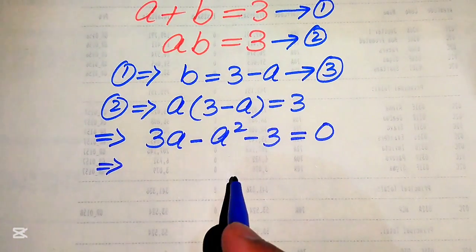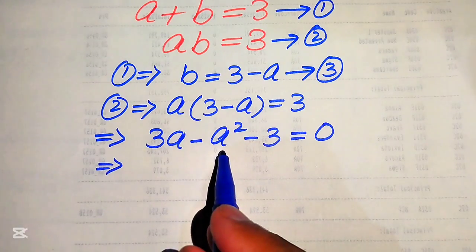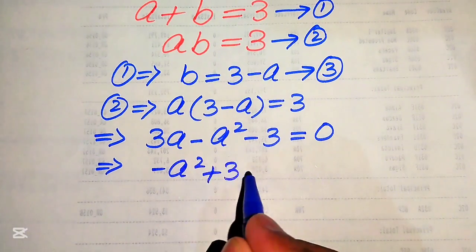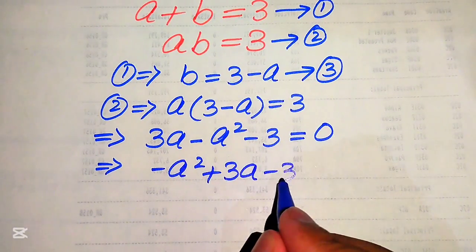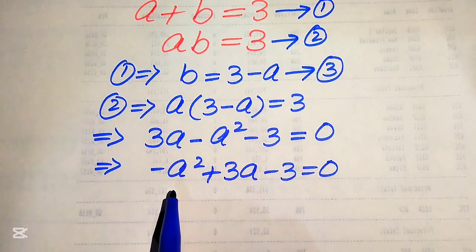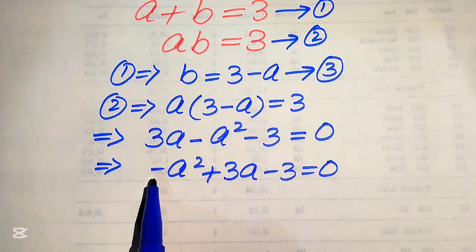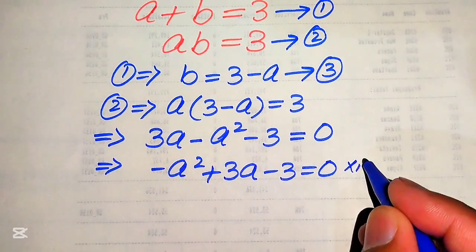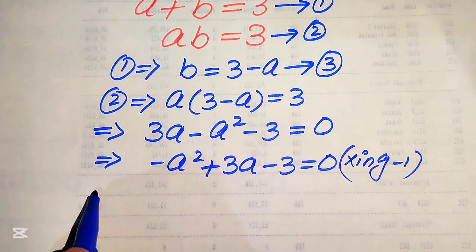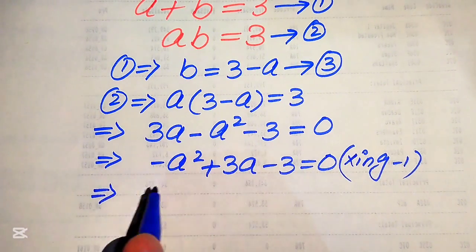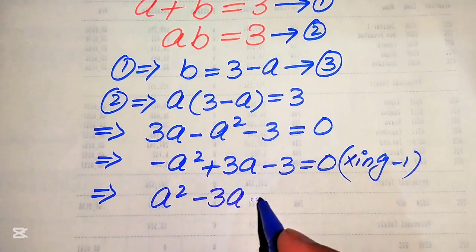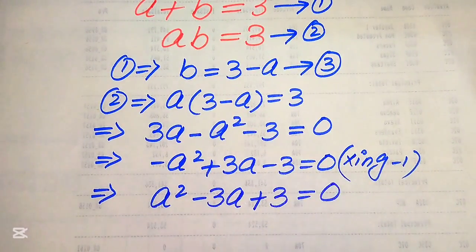In the next step we rearrange the terms: minus A squared plus 3A minus 3 equals 0. Since we need the leading term to be positive, we multiply both sides by minus 1, changing the sign of each term, giving us A squared minus 3A plus 3 equals 0.